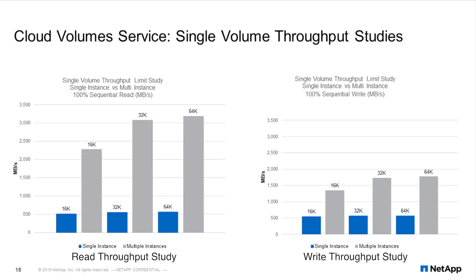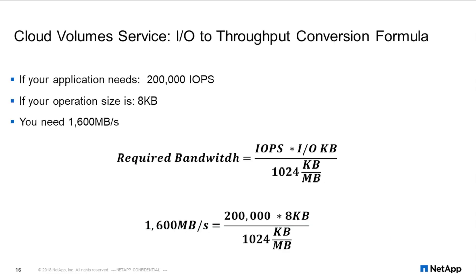Just as with random I/O, a single instance is not able to drive the maximum capability of a volume. We're seeing around 20 to 50 megabits per second for 16K, and over 3,000 megabits per second for 32K and 64K. Now that we have a good understanding of how much work can be driven through a volume from sequential or random I/O, we can begin to think about quotas and service levels.